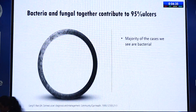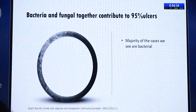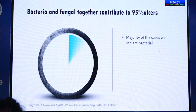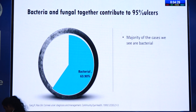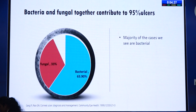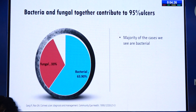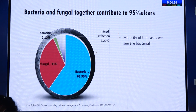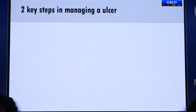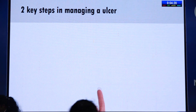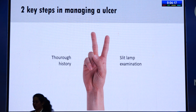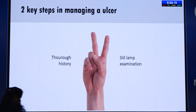By definition, corneal ulcer means disruption of the epithelium with infiltration of the stroma. Most ulcers in India are bacterial, contributing more than 60 percent. The next is fungal, which contributes close to 30 percent; the remaining are parasitic and mixed infections. The two key steps in managing an ulcer are thorough history taking — which is often neglected — and thorough slit lamp examination.